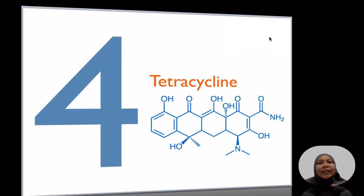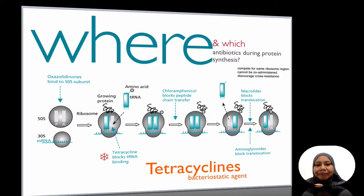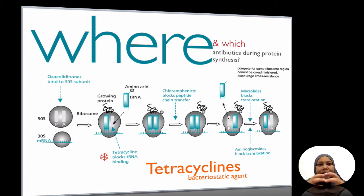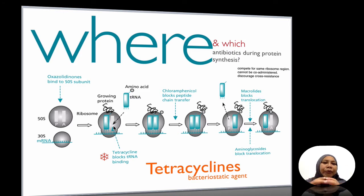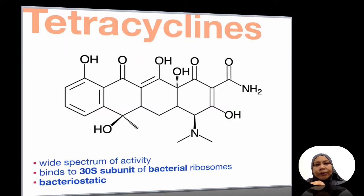We are coming to the fourth protein synthesis inhibitor, which is tetracycline. Tetracycline inhibits in the early stage of protein synthesis. It blocks the tRNA site in the bacterial ribosome, not in human or eukaryote ribosomes. Therefore, when it blocks the tRNA binding site, it stops the tRNA carrying amino acids from binding to the ribosome, and protein synthesis stops. Tetracycline is also a bacteriostatic agent. It binds to the 30S subunit of the bacterial ribosome and has wide spectrum activity.